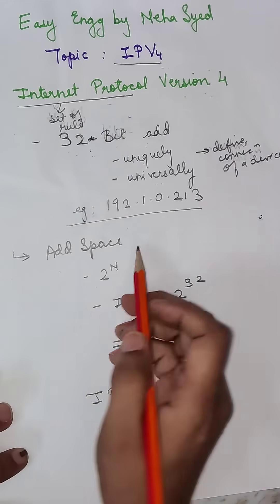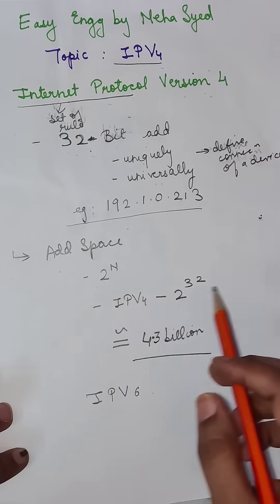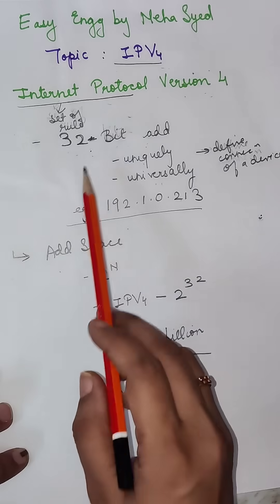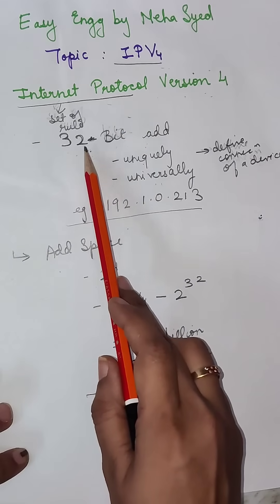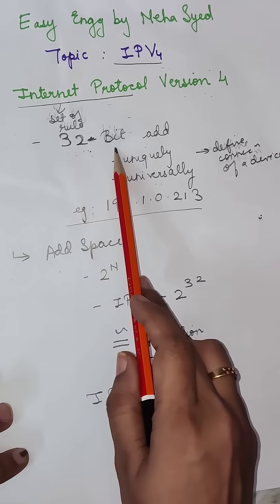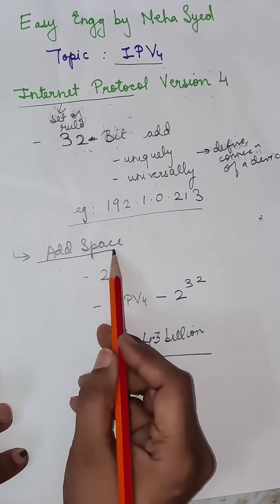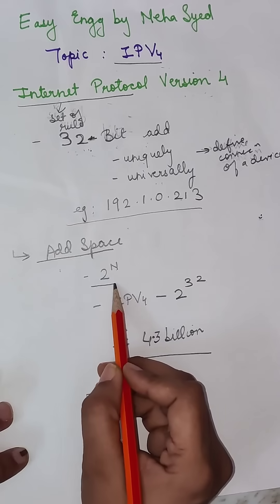To communicate through the internet to the network, we have a unique address given to each of the devices which is going to be 32-bit long, and the address space we have is 2 raise to n.